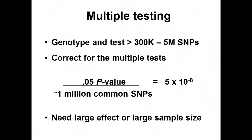How many associations would you expect by chance when performing so many statistical tests? When testing several hundred thousand to millions of variants, we need to consider the appropriate significance threshold. For common variants in a European ancestry population, there are approximately one million common variants across the genome. If we typically use a p-value of 0.05 for significance, adjusting for approximately one million SNPs tested suggests the threshold for genome-wide significance should be 5 × 10⁻⁸. To achieve this, we need either a large effect or a larger sample size.